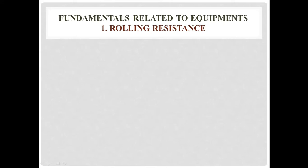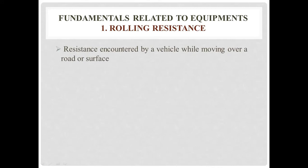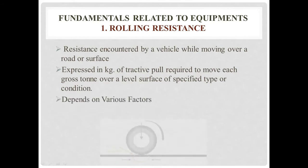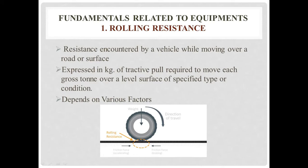Let us move further to fundamental terms related to equipments. Starting with the first - rolling resistance. As your vehicle or equipment moves further, resistance is encountered in the opposite direction. That resistance caused by a vehicle while moving over a road or surface in the opposite direction of its traveling is called rolling resistance. Rolling resistance is expressed in kg. It depends on various factors - the surface on which it is traveling can be either hard surface, soft soil, moist soil, or marshy land, giving different amounts of rolling resistance.